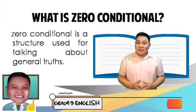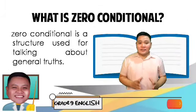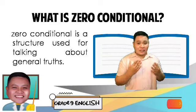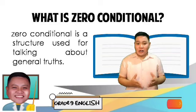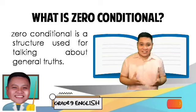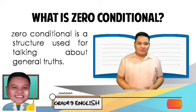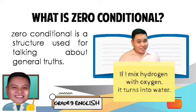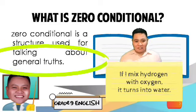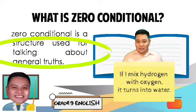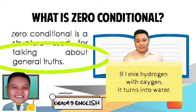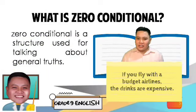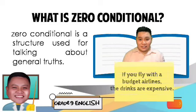Now, let's talk about the zero conditional. Zero conditional does not talk about the past, the present, or the future. But it talks about things which are always true, like scientific facts. For example: If I mix hydrogen with oxygen, it turns into water. Sometimes the things we talk about are not facts but rather general truths. Another example: If you fly with a bunch of airlines, the drinks are expensive.